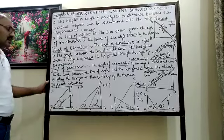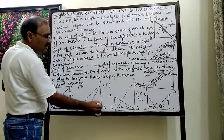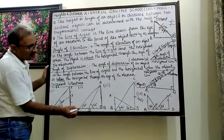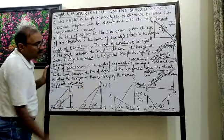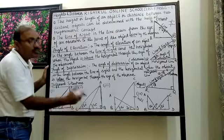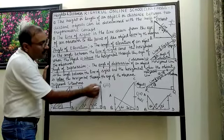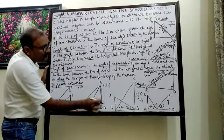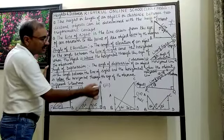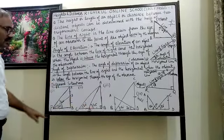In the next situation, AB is a building and the observer is at point C. He observes the top of the building at point A — the angle of elevation is 30 degrees. As he walks toward the building, the angle of elevation changes from 30 to 45 degrees. So as we get closer to the building, the angle of elevation increases; as we move away, it decreases.